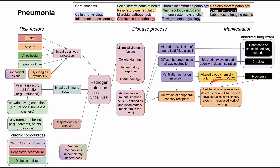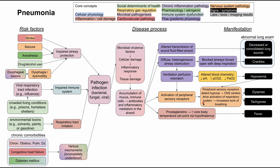Hypoxemia can cause another problem: it triggers peripheral sensory receptors that detect the hypoxia and stimulate the central nervous system to drive activation of the respiratory system. This leads to increased work of breathing — your body detects low oxygen and your brain triggers you to breathe more. This manifests as dyspnea and tachypnea, so you'll be short of breath and breathing rapidly. Additionally, the antibodies and inflammatory mediators can increase prostaglandins, which stimulate your core body temperature set point to increase in the hypothalamus. This manifests as fever.